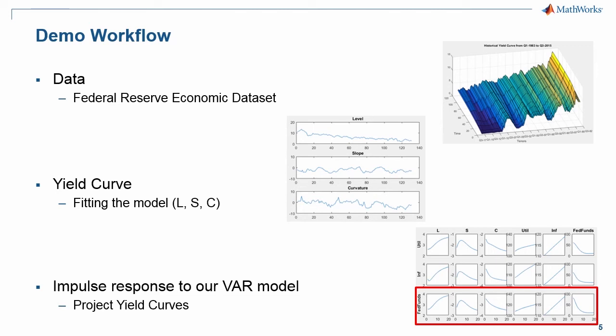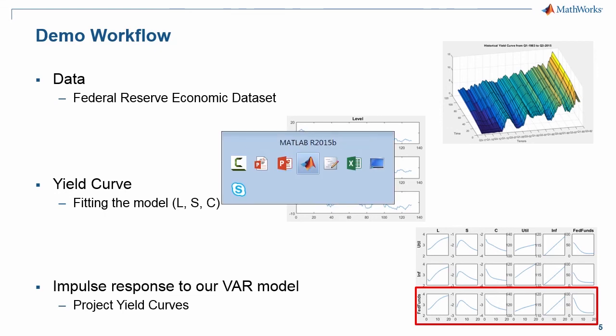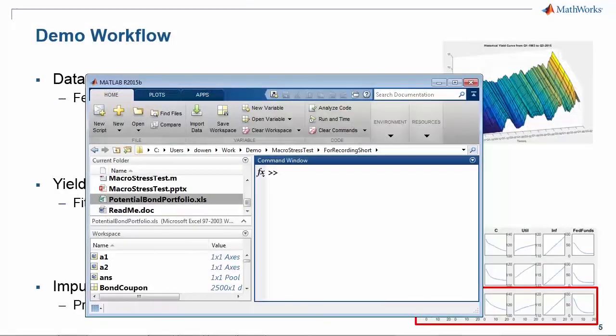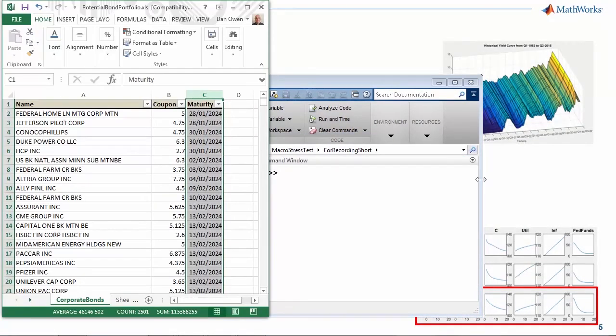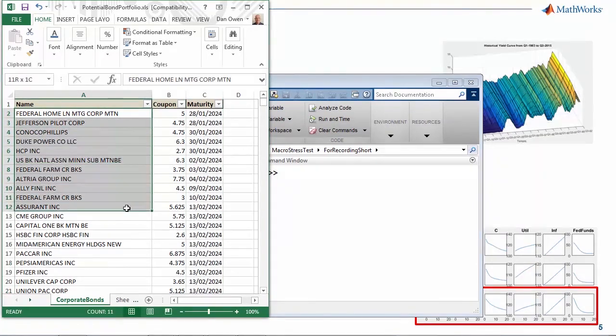I'm now going to step to the final step of this workflow, which is to price a portfolio. My portfolio is a portfolio of corporate bonds. I've got around about two and a half thousand corporate bonds, each of which has a coupon and a maturity.